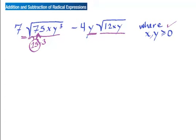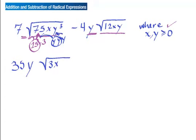That 25 comes out of the square root as 5, and it combines with the 7 to make 35 — seven times five is 35. What's left inside is still that 3. Nothing simplifies with that x, he just stays there. But for y³, that's y times y times y, so there's a pair — that pair comes out as one y, leaving one y still inside the radical. So the first term simplifies to 35y√(3xy).